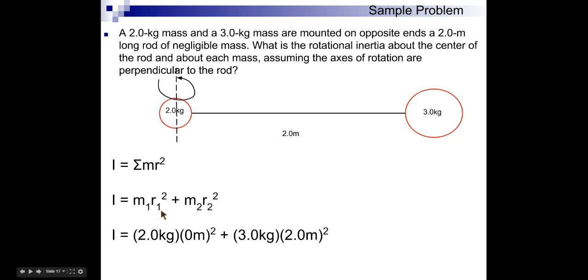But now notice that the distance this object is away from the rotational axis is zero meters. So, that makes this entire expression here zero. This mass, three kilograms, is now two meters away from the rotational axis. In this case, we get 12 kilogram meters per second squared.